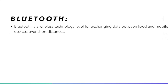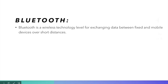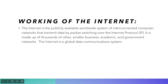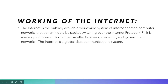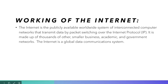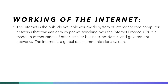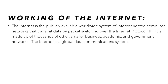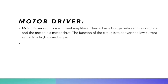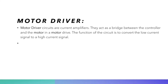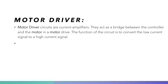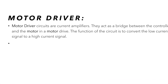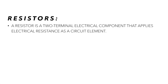Bluetooth is a wireless technology standard for exchanging data between devices over short distances. Working of the Internet: the Internet is a publicly available worldwide system of interconnected computer networks that transmit data by packet switching. Motor driver: motor driver circuits are current amplifiers. They act as a bridge between the controller and the motor in a motor driver. Resistor: a resistor is a two-terminal electrical component that applies electrical resistance as a circuit element.